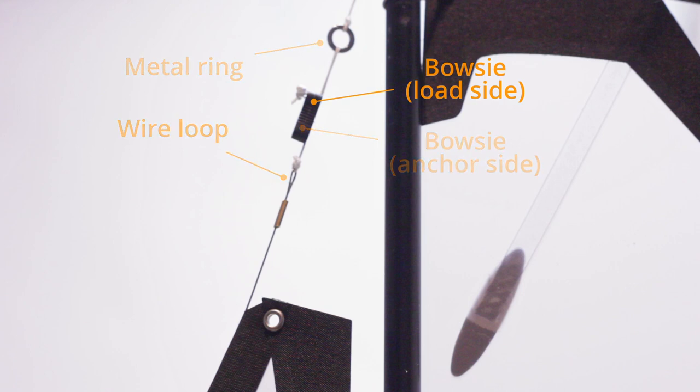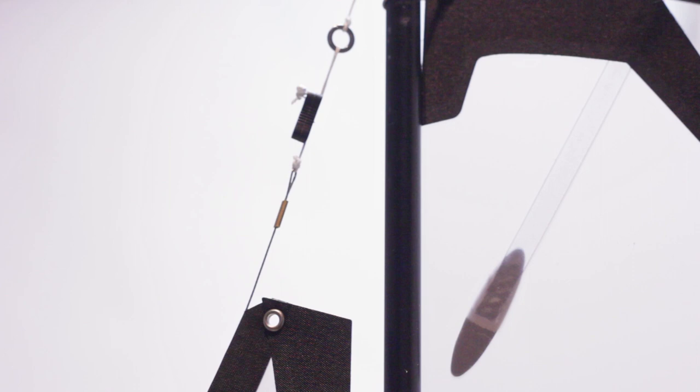When this is done pull the bousy down to create more tension in the forestay until the luff of the jib starts to wrinkle.